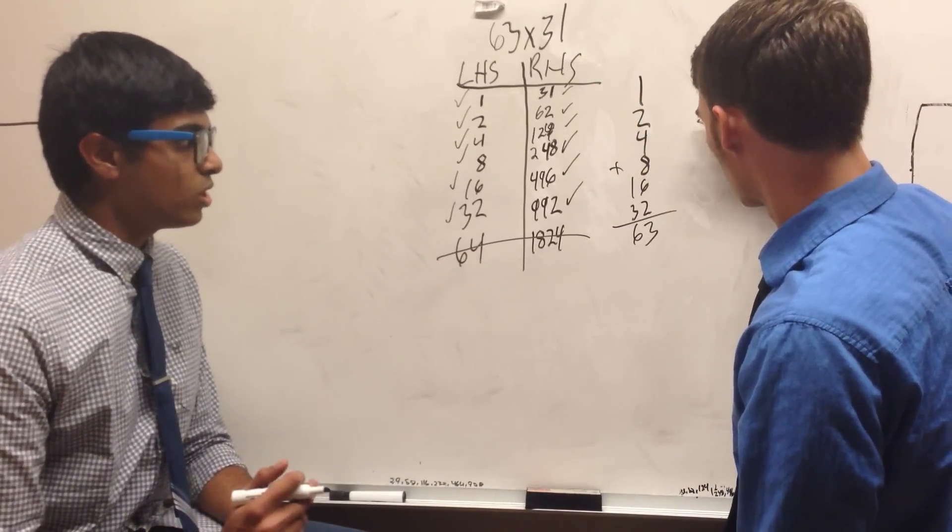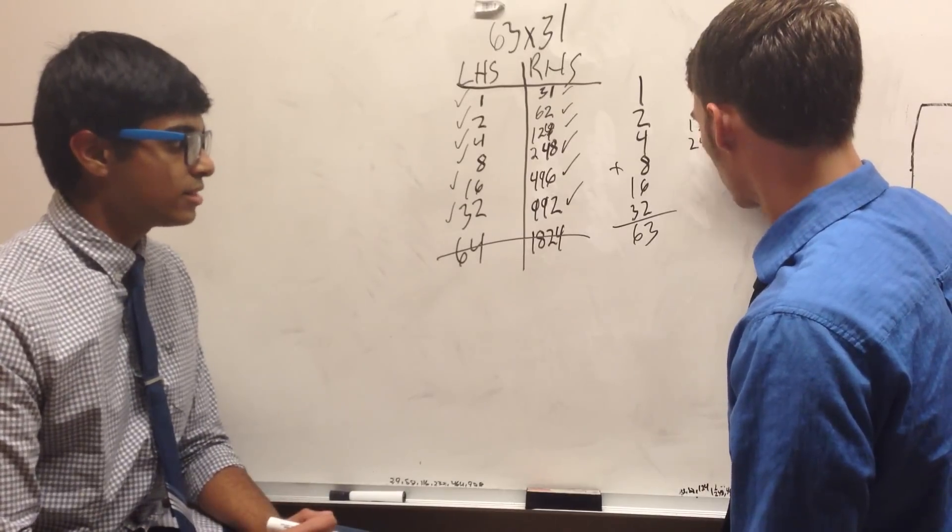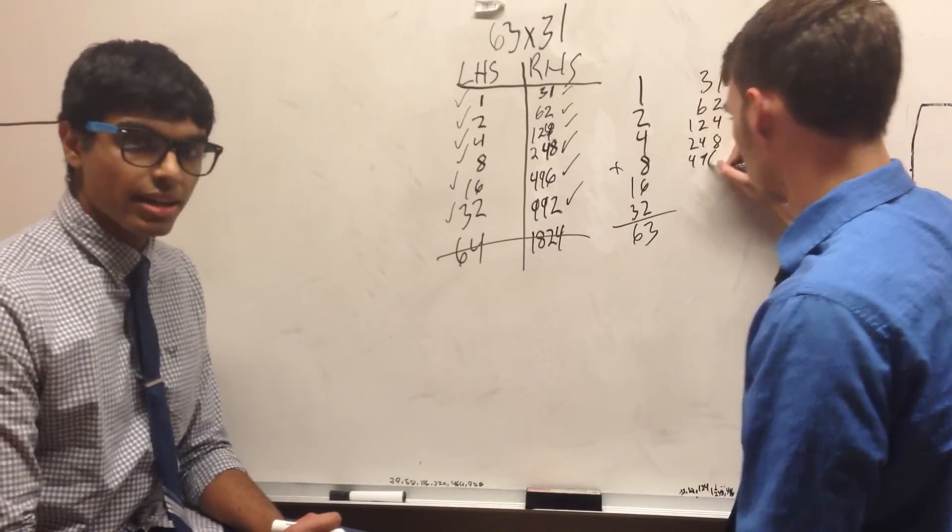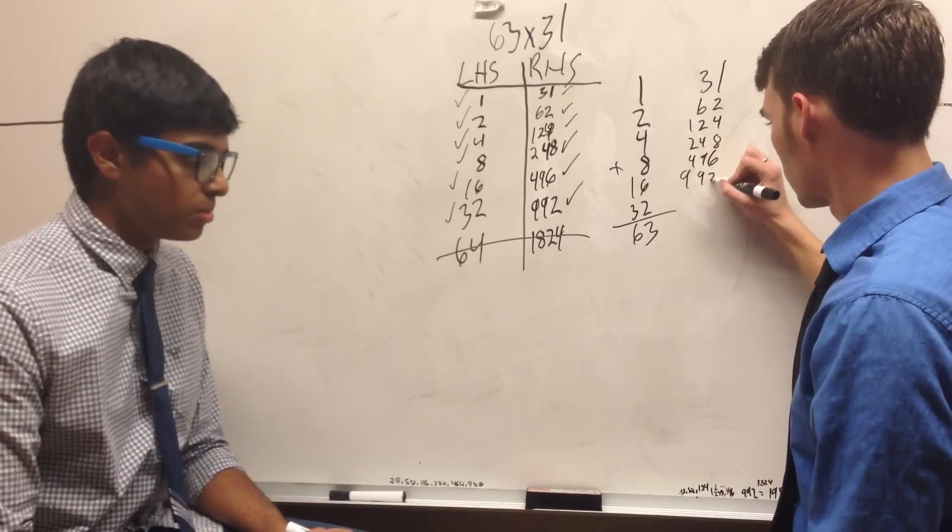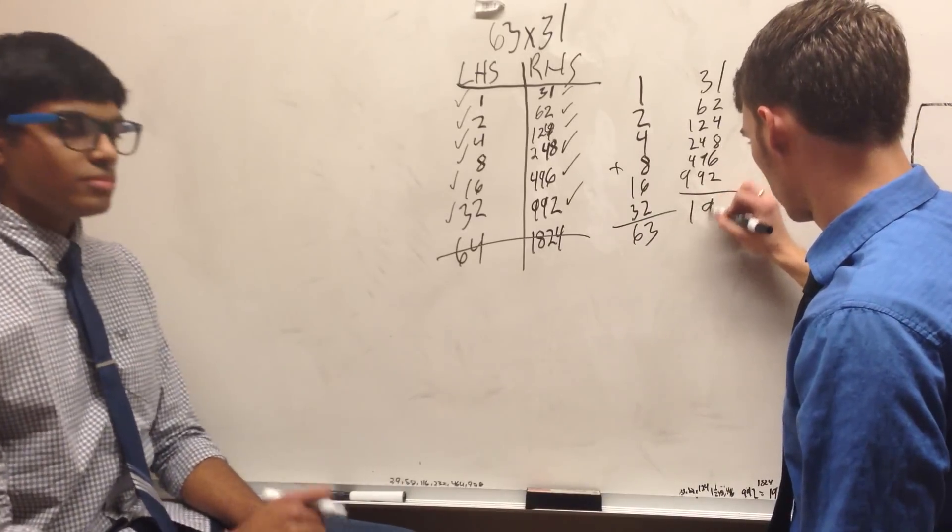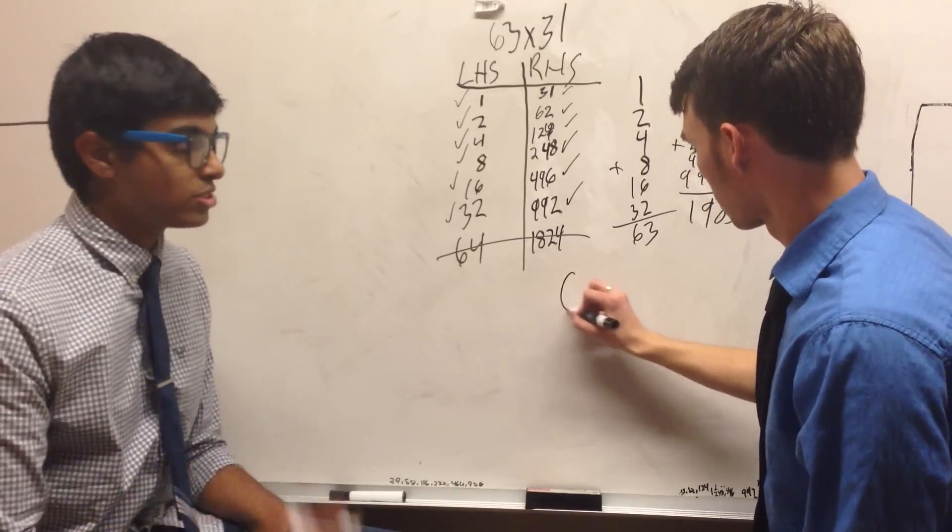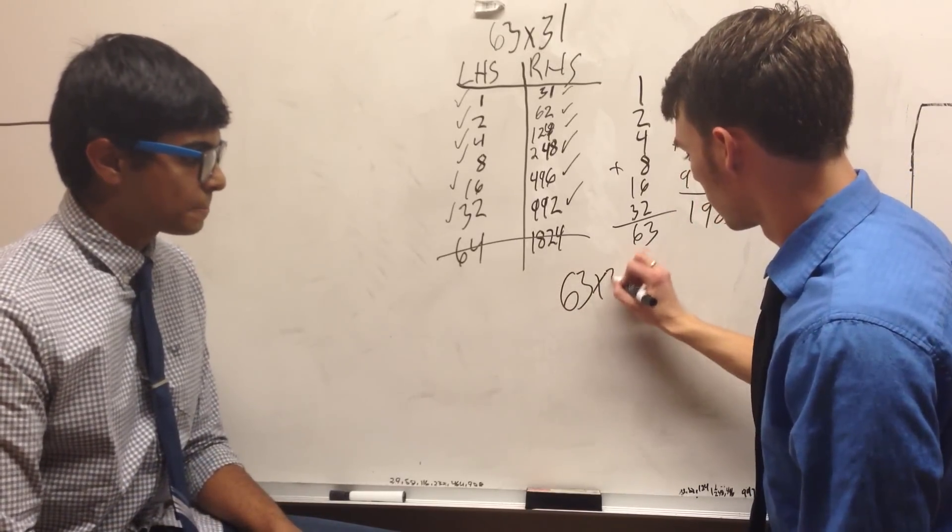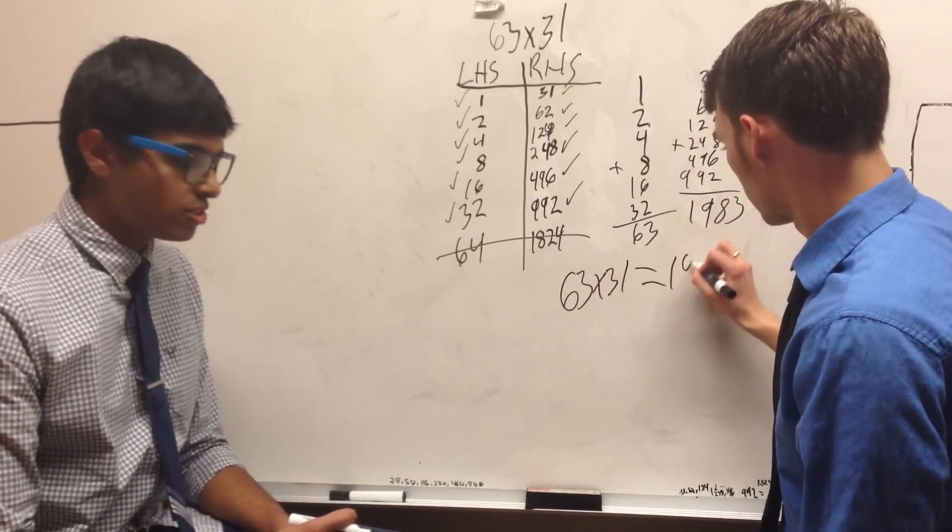You're going to take 31, 62, 124, 248, 496, and 992, and add all those numbers up. You're going to get 1,953, which is your answer when you multiply 63 and 31.